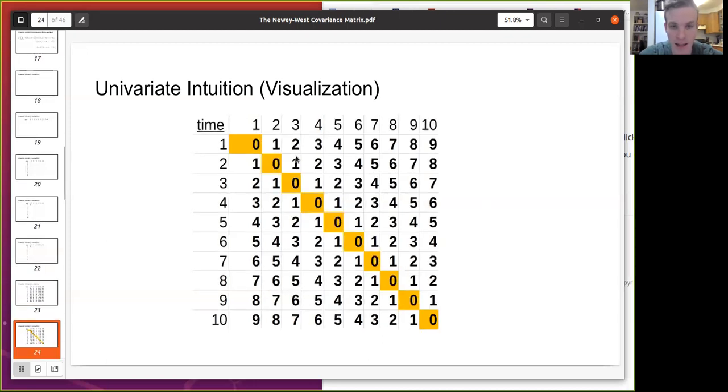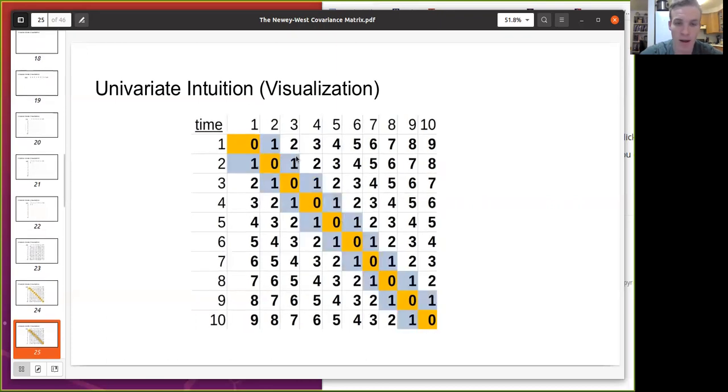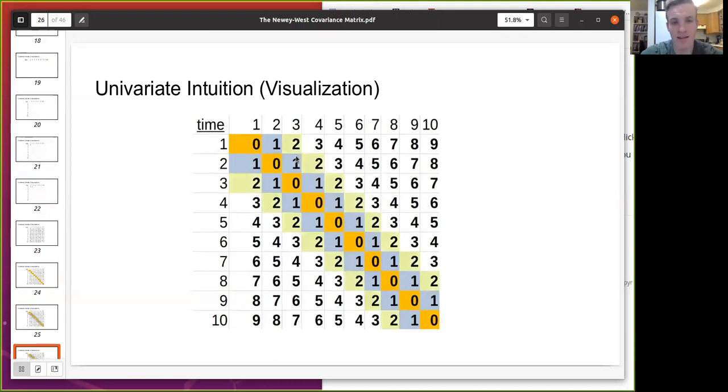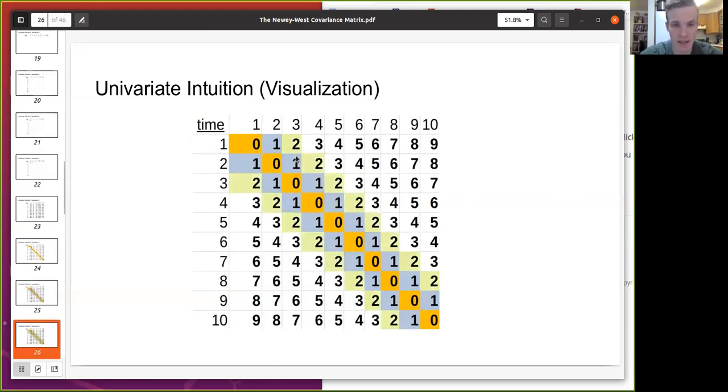And we kind of notice some nice patterns. Along the diagonal, we have these zeros. Along the ones, or along the next, I guess it's a super diagonal, we have ones, twos, so on and so forth. All right.